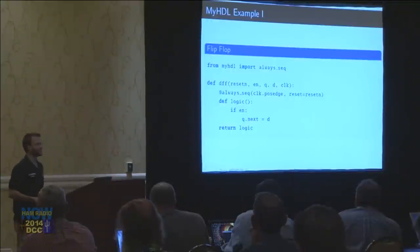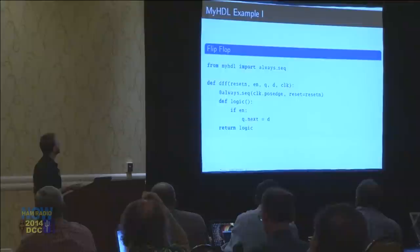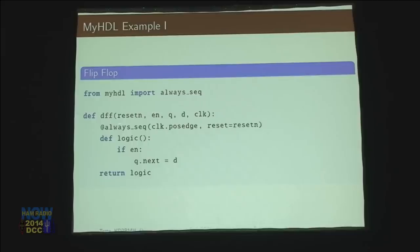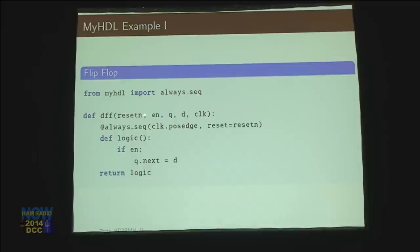Here we go — this is our first myHDL example. I'm going to go through it line by line. The first line: I import from myHDL this thing called always_sequential. I create this thing called the d_flip_flop, and it takes in a bunch of arguments — the reset line, the enable line, the output, the input, and the clock. What this line says is that every time the clock has a positive edge, so every time the clock ticks up, the following little bunch of logic is going to get executed.